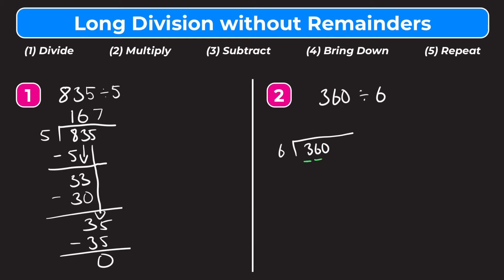Since we used the 3 and the 6, we write the 6 over the 6 and not the 3. Multiply: 6 times 6 is 36. Subtract: 36 minus 36 is 0. Bring down the 0. Now how many whole groups of 6 go into 0? That's 0, so we write 0 up top. Multiply: 0 times 6 is 0. Subtract: 0 minus 0 is 0. We've moved all the way to the ones column, so we're done. The answer to 360 divided by 6 is 60.